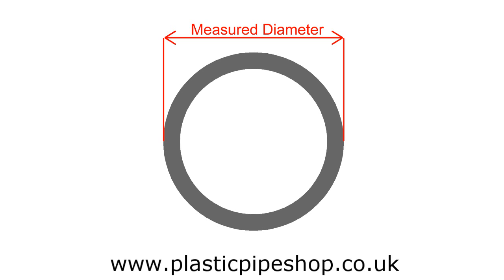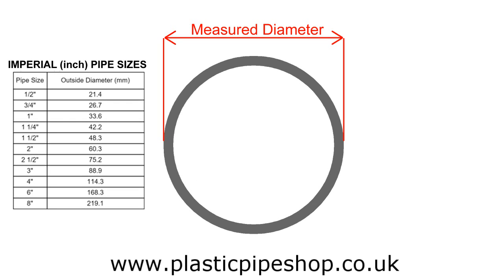We get two different systems in industrial plastics: imperial and metric. As you can see from the table on the left, imperial pipes are available in sizes such as half-inch, three-quarter-inch, one-inch, and so on. However, care must be taken as these sizes do not directly refer to the measured diameter — they are instead a representation of the approximate bore of the pipe.